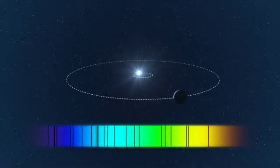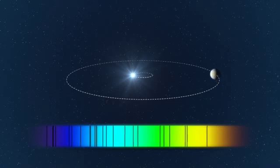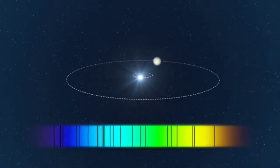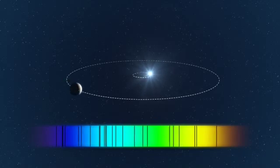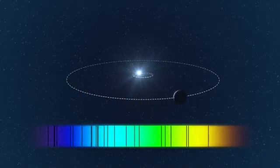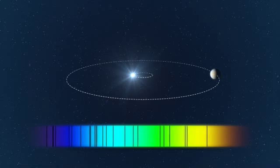A planet in orbit causes its star to regularly move backwards and forwards as seen from Earth. This creates a tiny shift of the star's spectrum that can be measured with an extremely sensitive spectrograph such as HARPS.